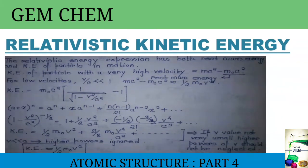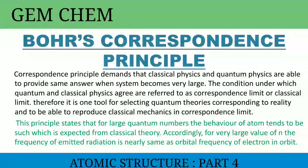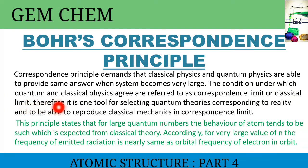Now we will come to Bohr's correspondence principle. The correspondence principle demands that classical physics and quantum physics provide the same answer when the system becomes very large. The condition under which quantum and classical physics agree is referred to as the correspondence limit or classical limit. In physics, the correspondence principle states that the behavior of a system described by quantum mechanics reproduces classical mechanics in the limit of large quantum numbers — that is, for large orbits having large quantum numbers, calculations from quantum mechanics must agree with classical calculations.